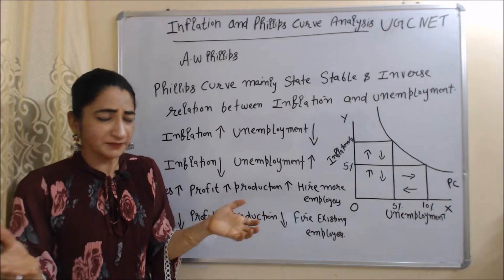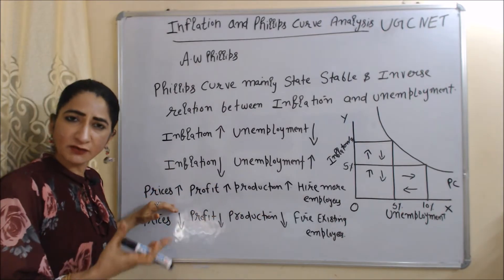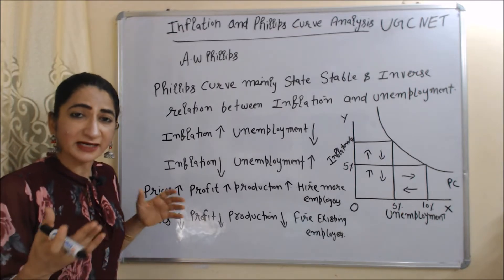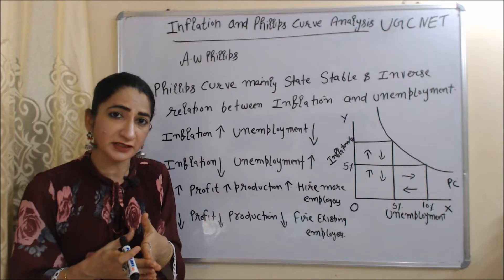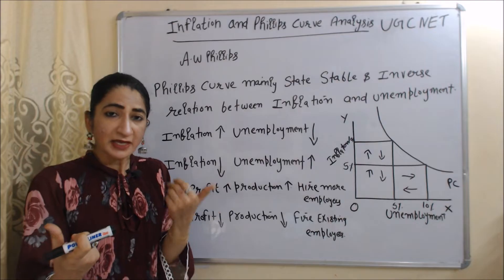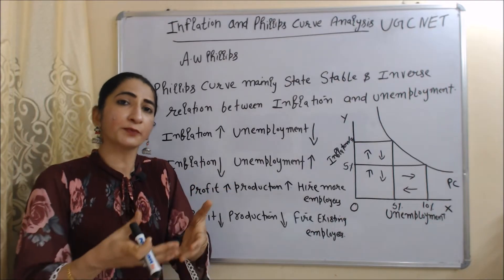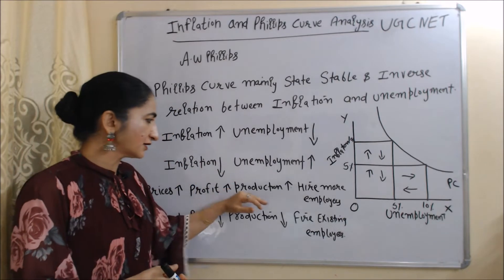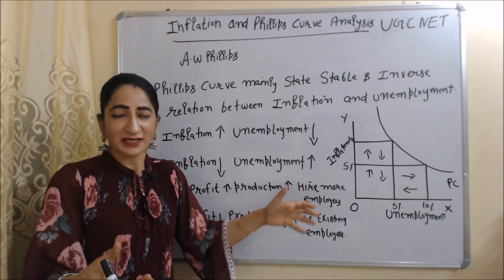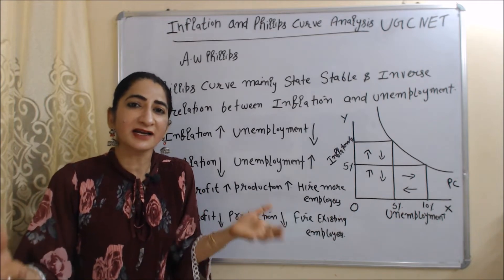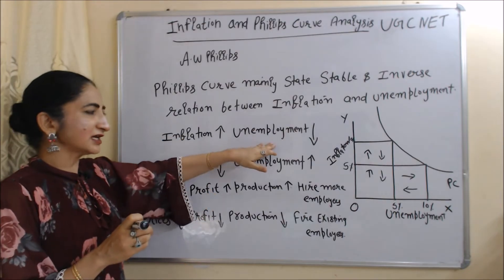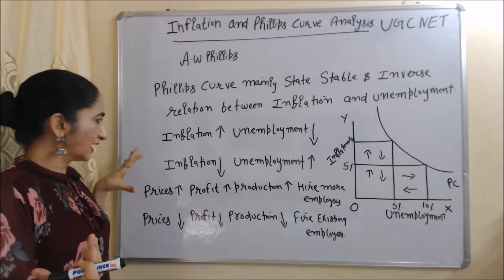If inflation increases, that means prices of goods and services are increasing. If prices are increasing, that means the profit of the producer is increasing. Now he is selling his product at a higher price, so profit will increase. This increased profit will motivate him to produce more. As a result, production will increase, and when production increases, he will hire more employees, so unemployment will reduce in the economy.